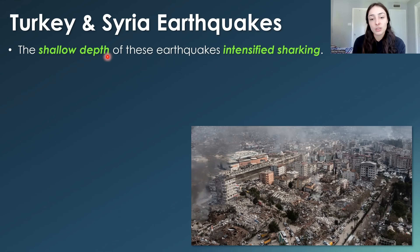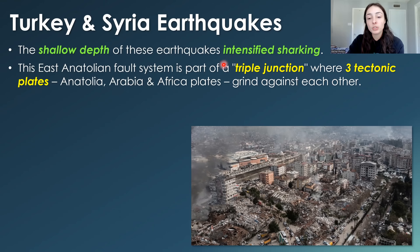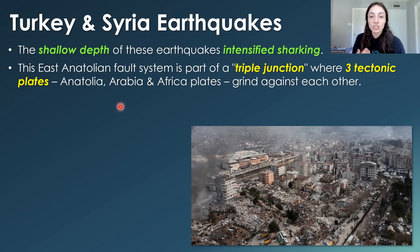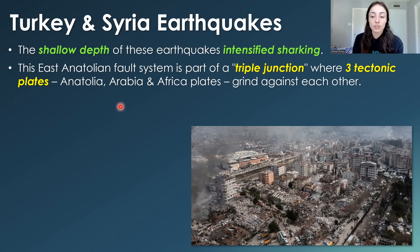The shallow depth of the Turkey and Syria earthquakes is what caused the intense shaking and so much damage in this region. The East Anatolian fault system is part of a triple junction where three tectonic plates are grinding against each other. Because this triple junction is so complex, involving many faults — not just three boundaries but each boundary associated with many faults within its system — that's what caused so many aftershocks. All of the faults are affected by the large slip of one singular fault and have to reshift to adjust to the new stress regime. It's estimated there were over 60 aftershocks.